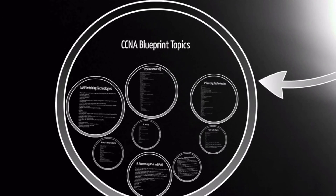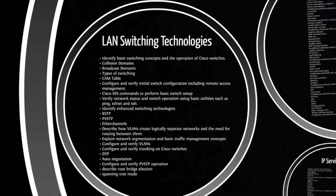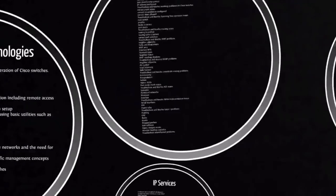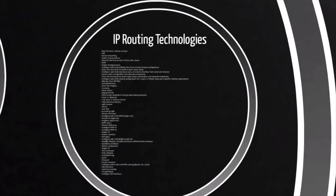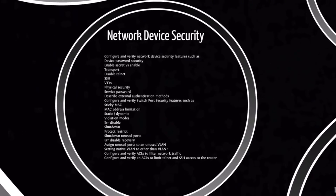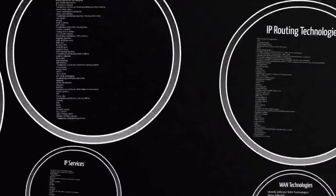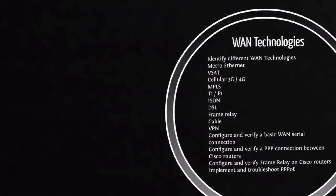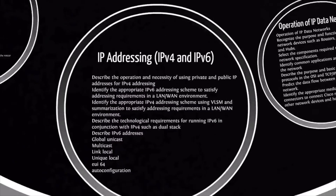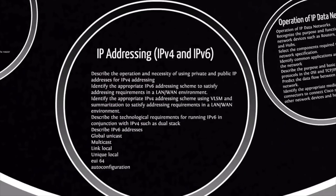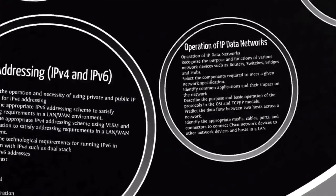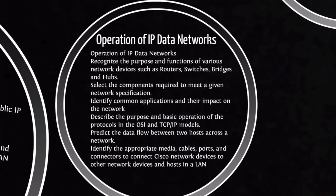Here's what the CCNA blueprint really contains: there's a ton of questions you could be asked about LAN switching technologies, IP routing technologies, network device security, troubleshooting, WAN technologies, IP services, IP addressing for both IPv4 and IPv6, as well as the operation of IP data networks.